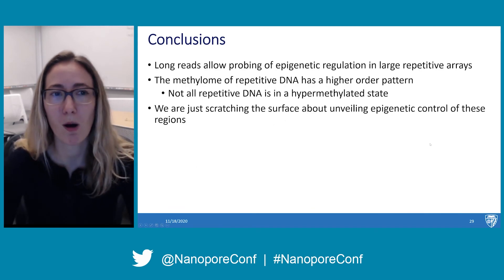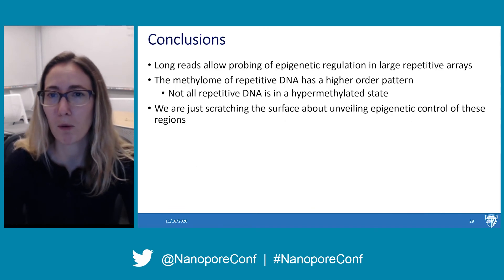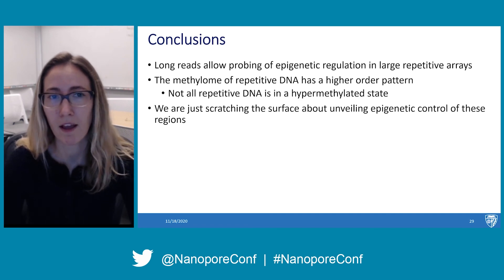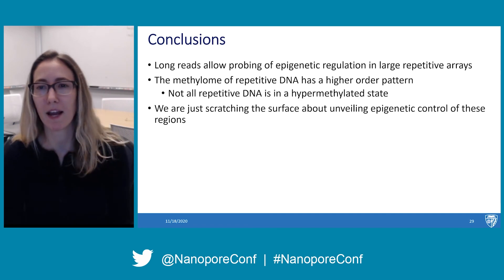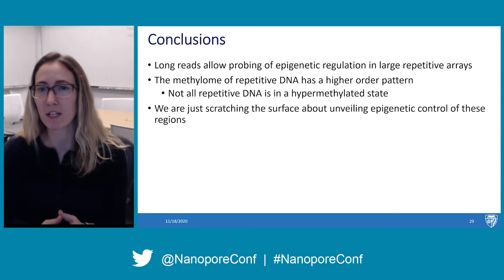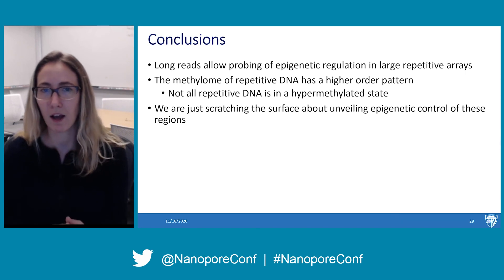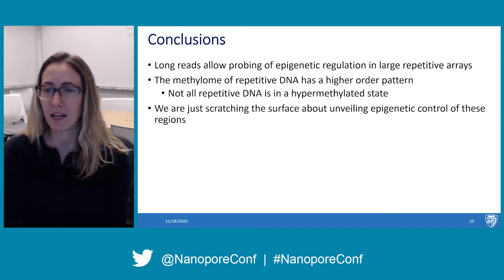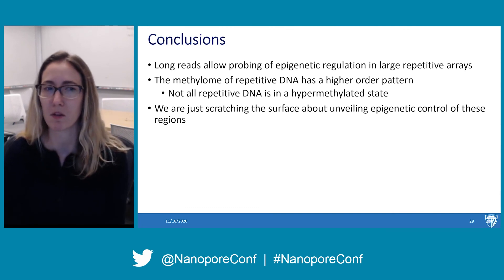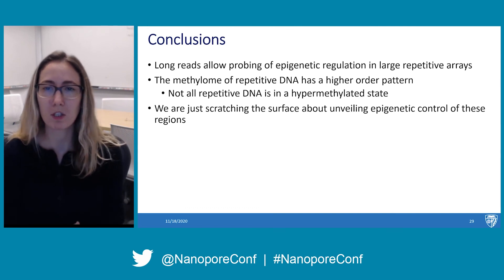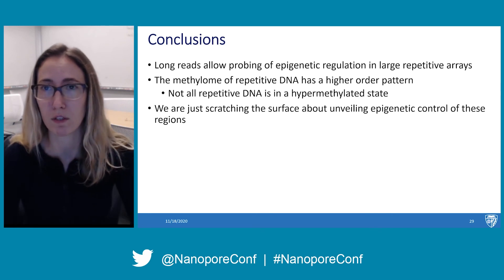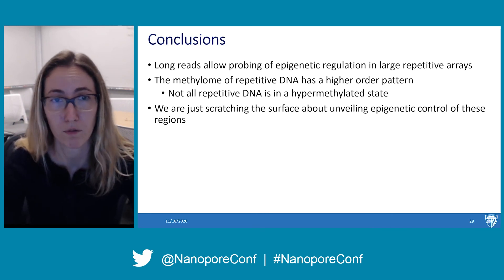Our conclusions are that long reads allow probing of epigenetic regulation in large repetitive arrays, and the methylome of repetitive DNA has higher order patterns — it's not just in a pervasive hypermethylated state. Repetitive DNA actually has a lot of higher order regulation going on within the epigenome, but we're just scratching the surface in unveiling epigenetic control of these regions.